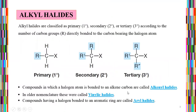Alkyl halides are classified according to whether they are primary, secondary, or tertiary, according to the number of carbon groups directly bonded to the carbon bearing the halogen atom. These structures are basically categorized according to their primary, secondary, and tertiary alkyl halides.